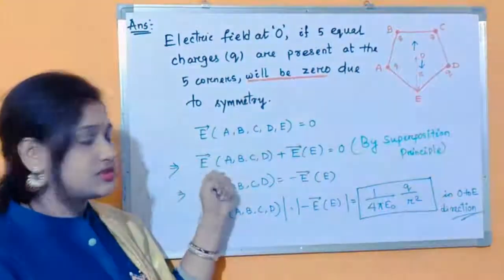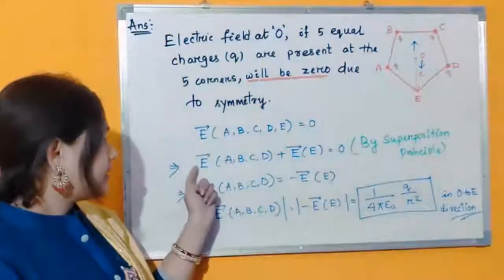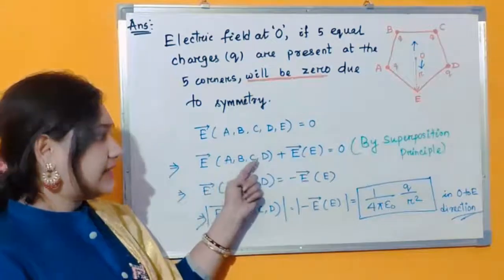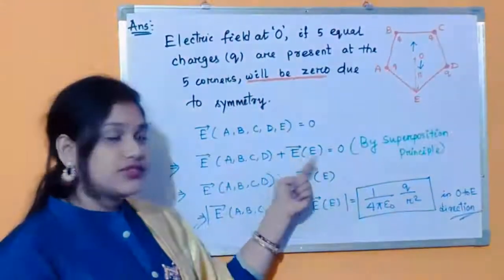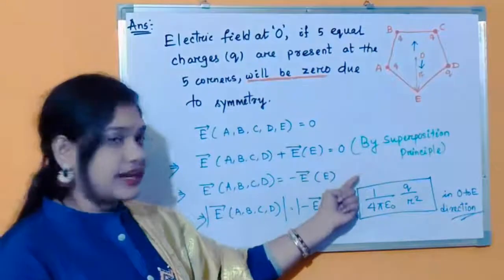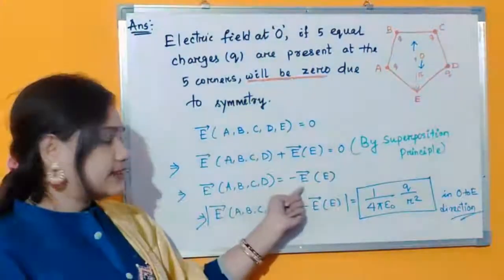So by the principle of superposition we can split up electric field of A, B, C, D plus electric field of E equal to zero. Then we are taking this term to the right-hand side and get this.